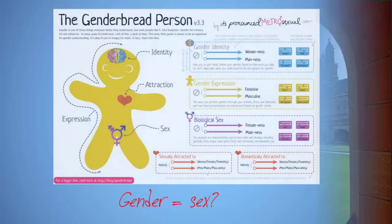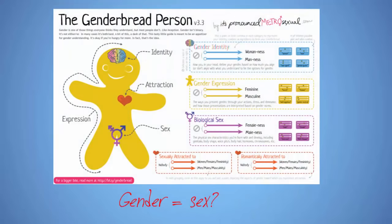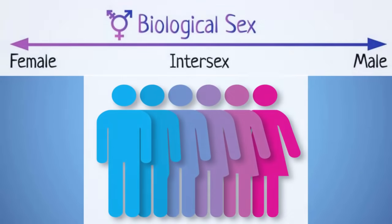In everyday language, people often use the terms sex and gender interchangeably. However, in sociology and other social sciences, the terms have more specialised meanings. The term sex refers to biological differences, including those of anatomy and physiology, between males, females, and intersex people.